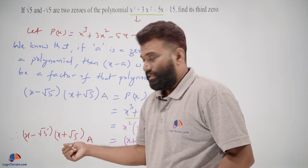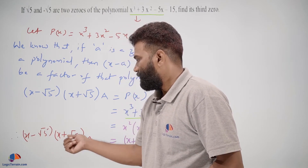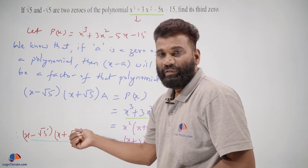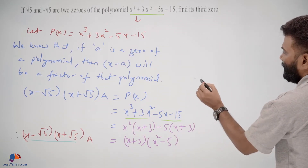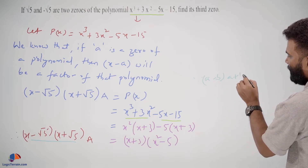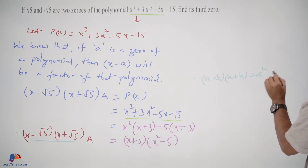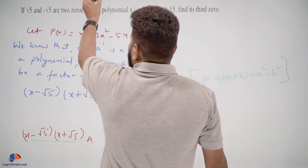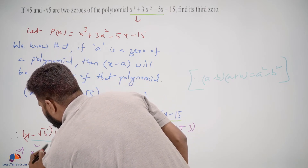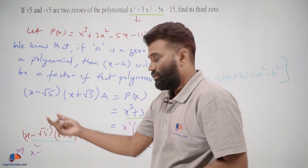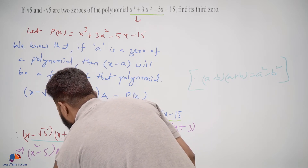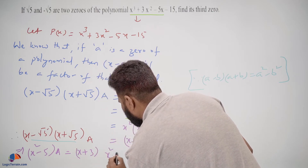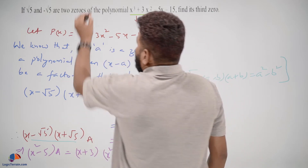Notice that x minus square root 5 times x plus square root 5 looks like the identity (a minus b)(a plus b), which equals a squared minus b squared. Applying that identity, x minus square root 5 times x plus square root 5 becomes x squared minus 5. So we have (x squared minus 5)(a) equals (x plus 3)(x squared minus 5).